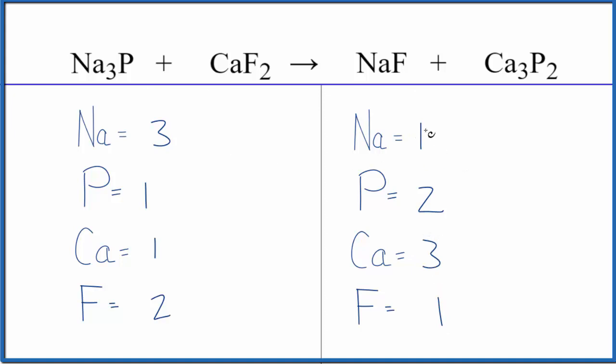We could start balancing the sodiums, but I think it works better to balance the calcium first. Because when we put a 3 in front of the CaF2, we have 1 times 3, that balances the calcium. But now we have 2 times 3, that gives us 6. So if we started with the sodium, we'd have to redo it later. Let's put a 6 here.